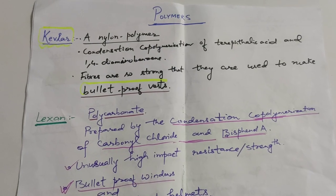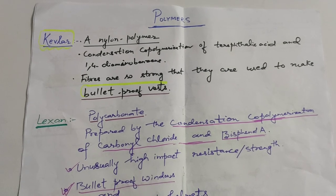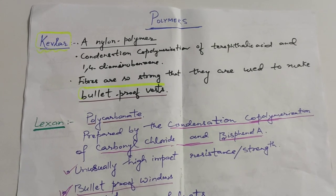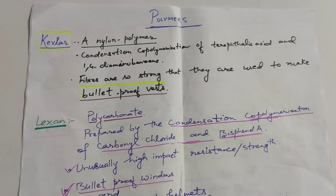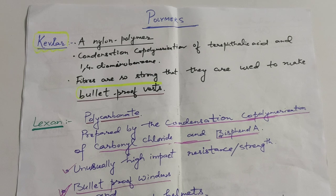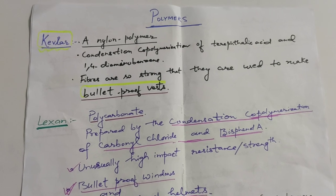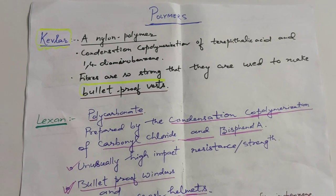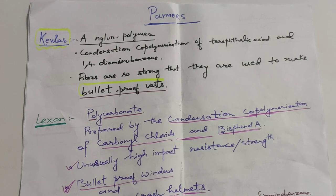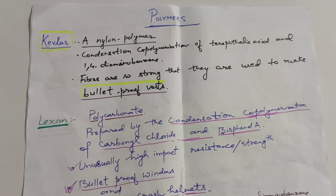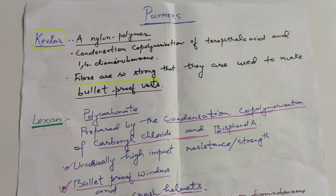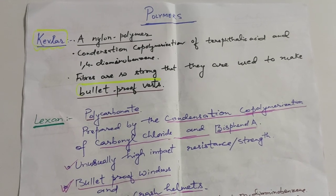Now let's discuss a few important polymers. Kevlar is a nylon polymer formed by condensation co-polymerization of terephthalic acid and 1,4-diaminobenzene. The Kevlar fibers are so strong that they are used to make bulletproof vests.